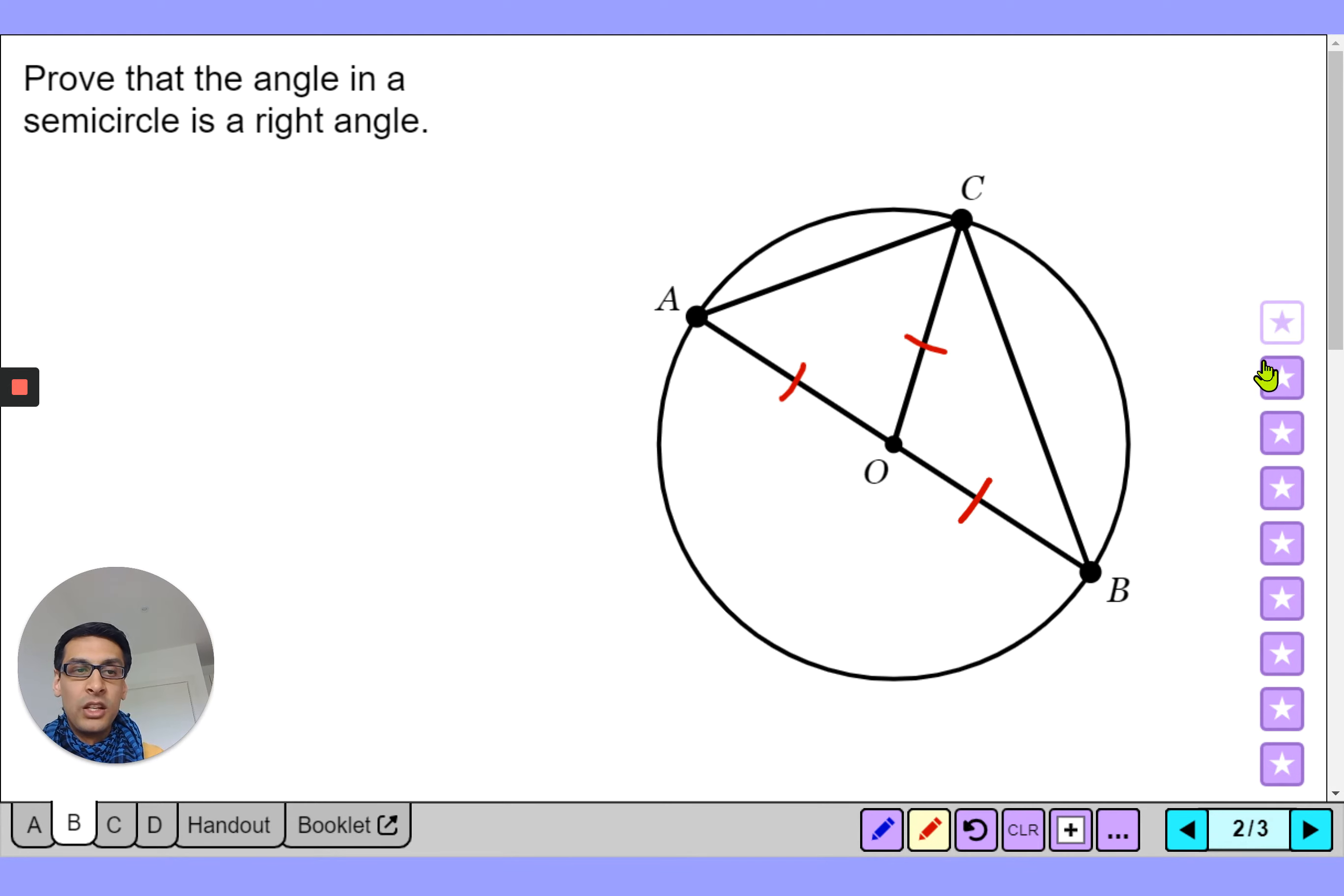So we can say well if this angle is X, well this triangle here OCB, well angle OCB is also going to be X as well. And then we can also say for this triangle ACO, well if this is Y, well then that must also be Y.